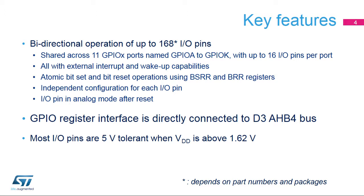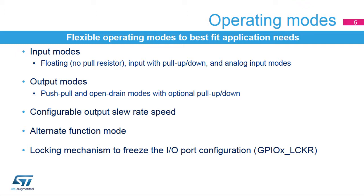Most of the I.O. pins are 5-volt tolerant when supplied from VDD above 1.62 volts. General Purpose I.O. pins can be configured for use in several operating modes. An I.O. pin can be configured in an input mode with floating input, input mode with an internal pull-up or pull-down resistor, or as an analog input. An I.O. pin can also be configured in output mode with a push-pull output, or an open-drain output with an internal pull-up or pull-down resistor. For each I.O. pin, the slew rate speed can be selected from four ranges for the best compromise between maximum speed and emissions from I.O. switching, to adjust the application's EMI performance.